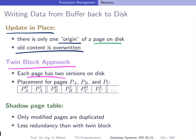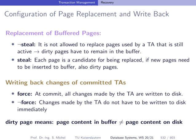There is one more approach mentioned for completeness called the 'shadow page table,' where only modified pages are duplicated. This saves storage consumption compared to the twin block approach. As mentioned, the way you treat crash recovery depends on several parameters. Here we look at the configuration regarding page replacement and write-back policy.